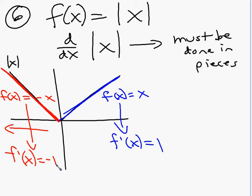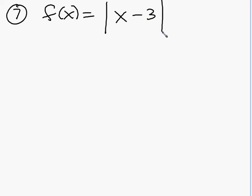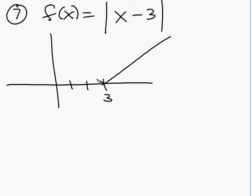So on this side, f prime of x is 1. When x is positive, the derivative is 1. And when x is negative, f prime of x is negative 1. So you have to consider it in pieces. What if the absolute value function was moved? Like f of x equals the absolute value of x minus 3. Let's kind of think our way through the graph here. This one is shifted to the right, three units.